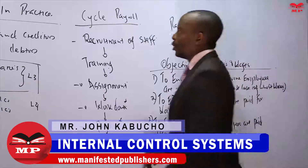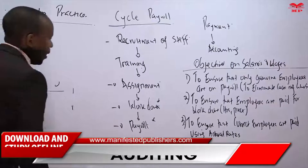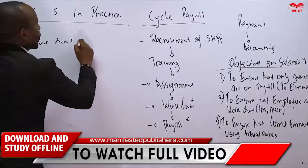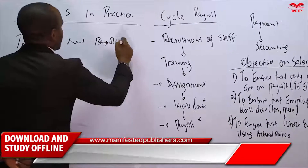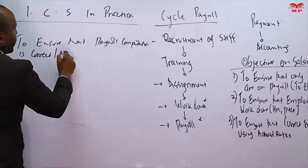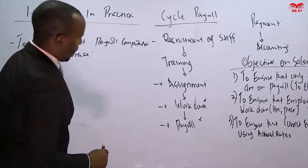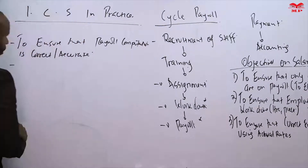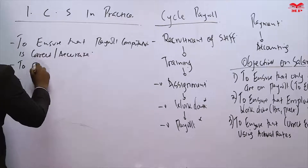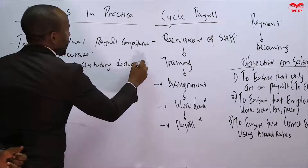A fourth objective is to ensure that payments have been properly calculated — that the computation is accurate. A fifth objective is to ensure that statutory deductions have been made, covering obligations such as PAYE, NHIF, and NSSF.